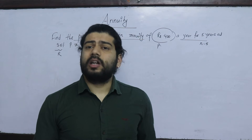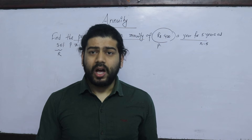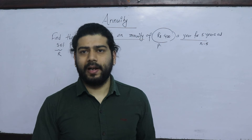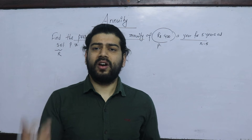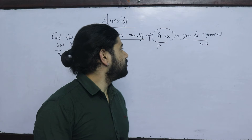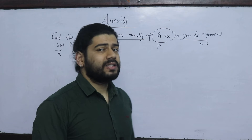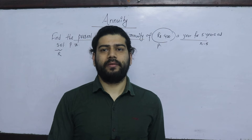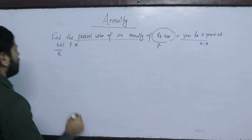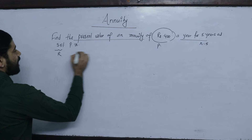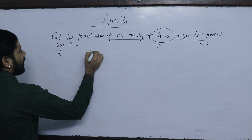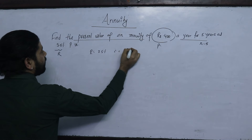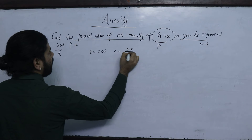The present value of NUT is given. Since we need the present value of NUT, we apply the present value formula. The interest rate is 3.5%, so i = 3.5 upon 100.